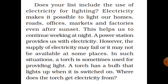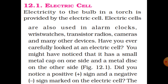Where does the torch get electricity from? Electric cells are used in torches, alarm clocks, wrist watches, transistor radios, cameras, and many other devices.